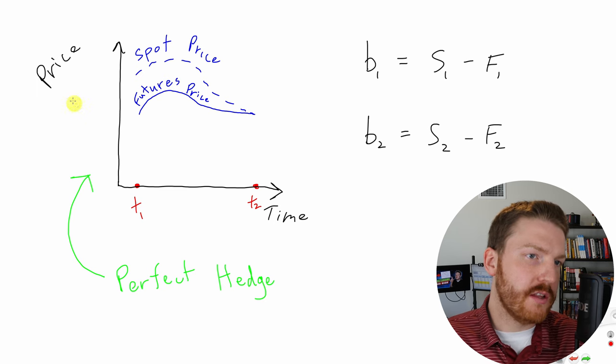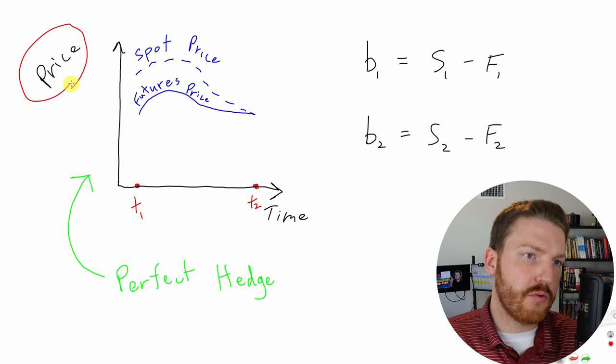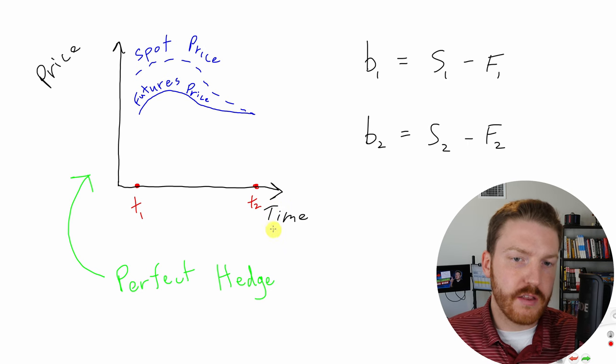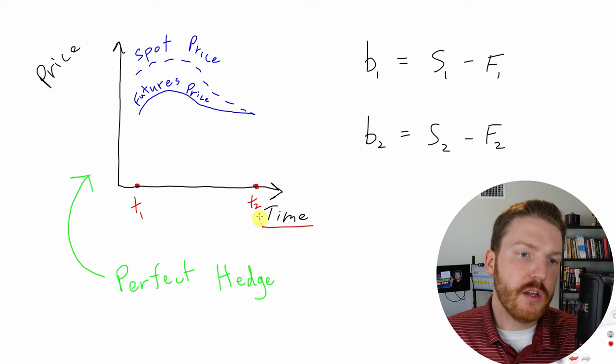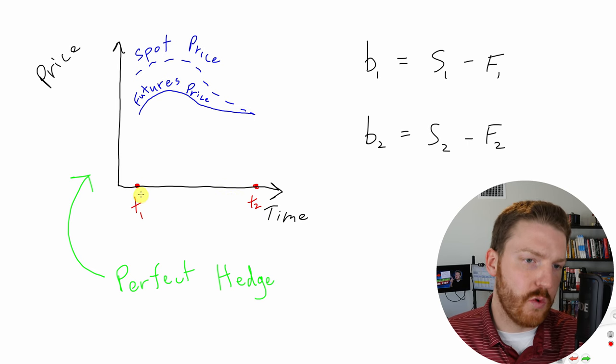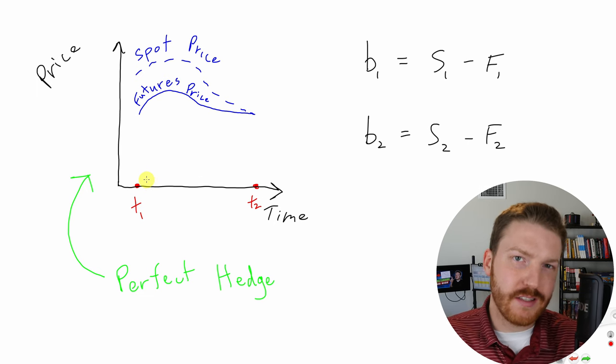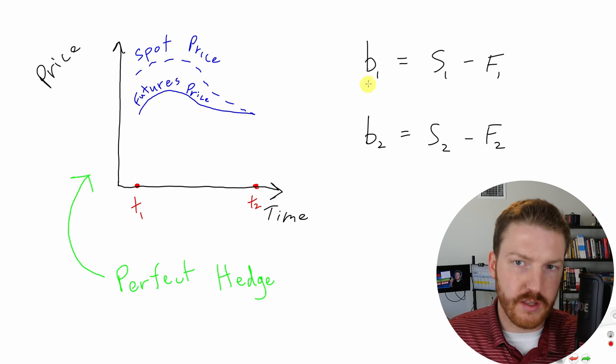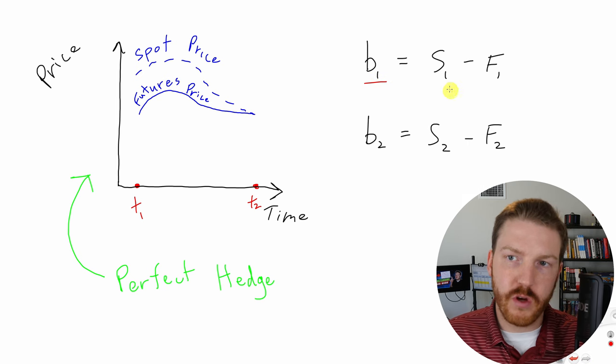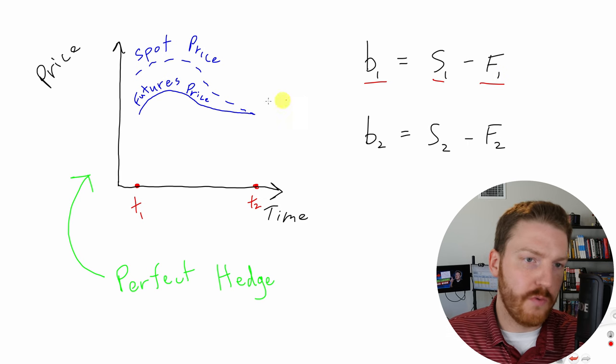Now, let's illustrate an example of a perfect hedge with no basis risk on a graph. So on this graph, we're looking at the vertical axis is the price of these assets, and then the horizontal axis is the time. So we're going to start at T equals one, which will just be today. And so we can find the basis at time one using this formula here, right? Basis at time one equals the spot price at time one minus the forward price at time one.